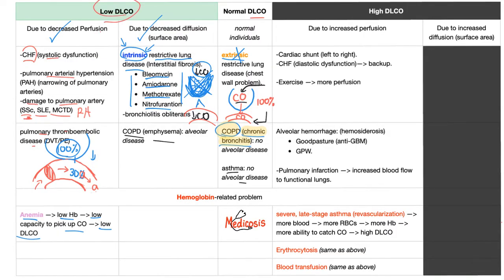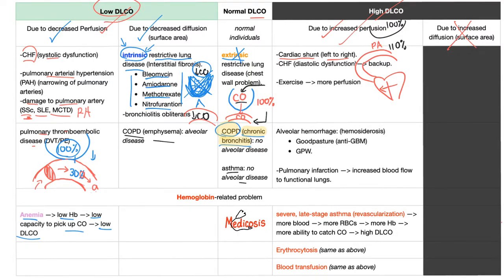Now let's talk about causes of high DLCO. It has to be due to increased perfusion — there is no such thing in medicine as increased surface area of diffusion. Example: cardiac shunt, such as left-to-right shunt. From the left side, which has oxygen, blood shunts to the right, so more blood goes to the lung to be oxygenated. Therefore, even if 100% of CO went to the alveoli, more than the predicted amount ends up in the artery because you have increased perfusion — this is increased DLCO.